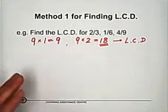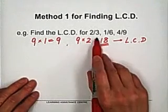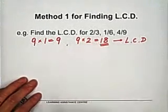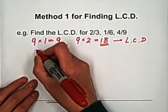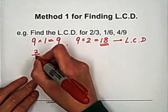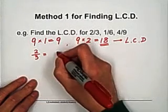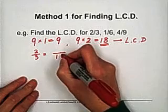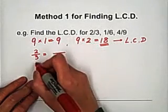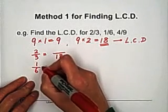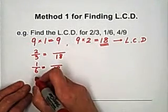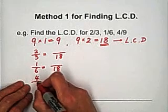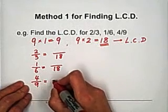The step two, you just convert each fraction into equivalent fraction with denominator eighteen. So two-thirds, of course, eighteen is common denominator. One-sixth, the common denominator is eighteen. And the four-nine, the common denominator is eighteen.